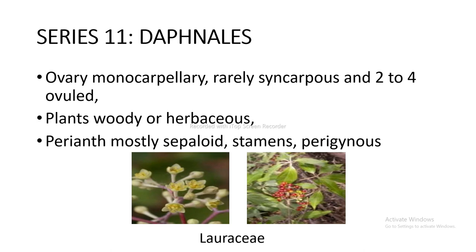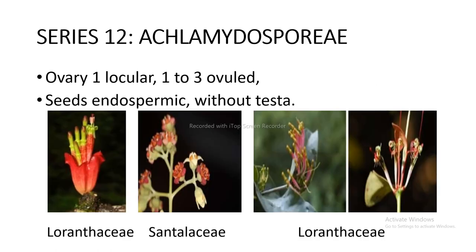Series 11 Daphnales: ovary monocarpellary, rarely syncarpous, 2 to 4 ovules, plants woody or herbaceous, perianth mostly sepaloid, perigynous — includes Lauraceae as shown in the figure. Series 12 Achlamydosporiae: ovary 1-locular, 1 to 3 ovules, seeds endospermic without testa — includes Loranthaceae and Santalaceae as shown in the figure.